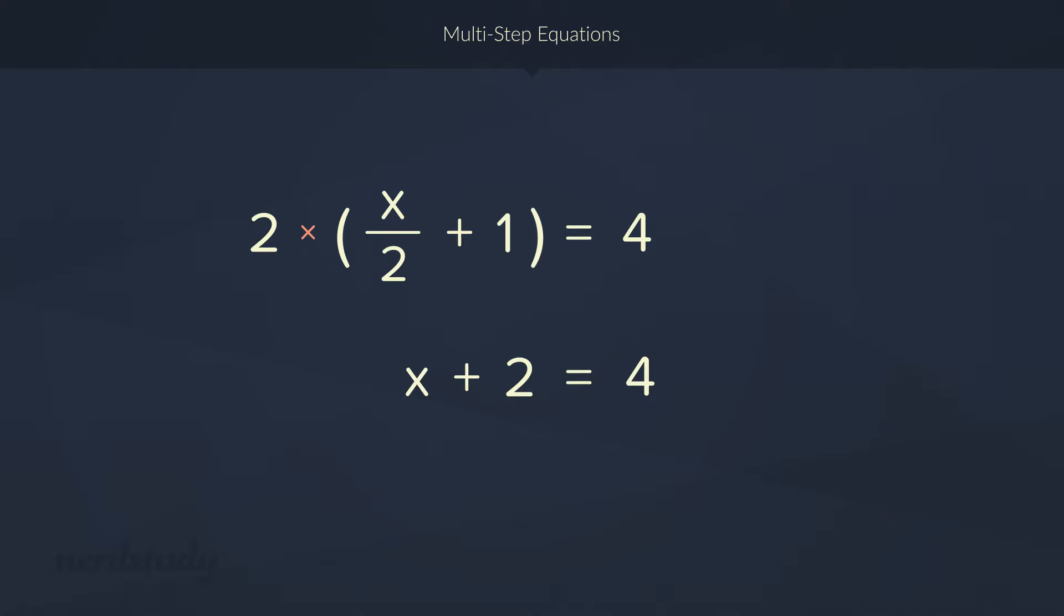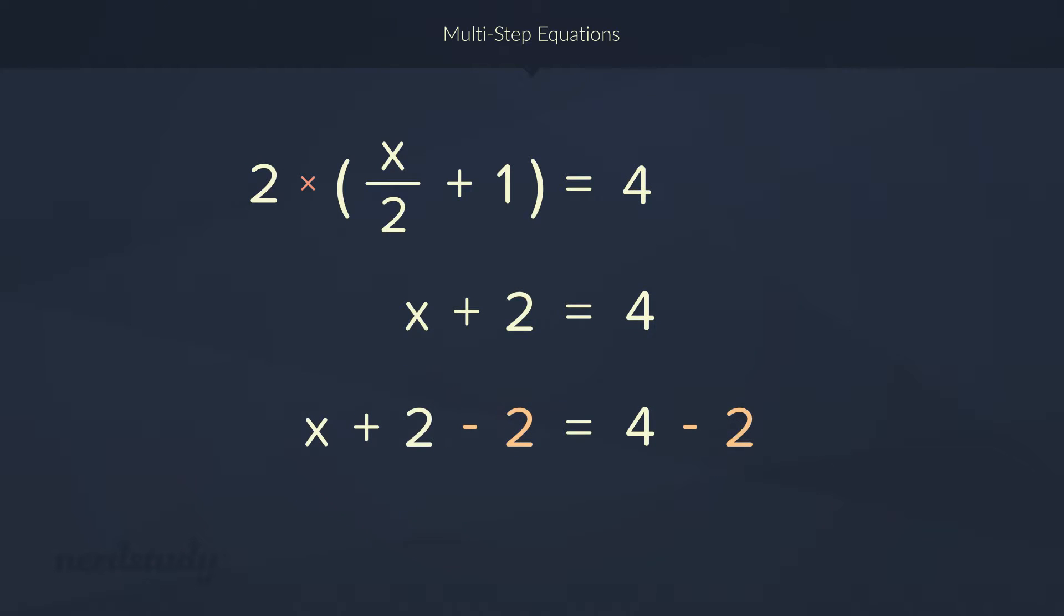So if you have no idea what we just did, try searching distributive property in our search menu, and you'll find a video that explains all of what we just did very well. Now, let's close this off by subtracting both sides by 2, and we get x equals 2 as a final answer.